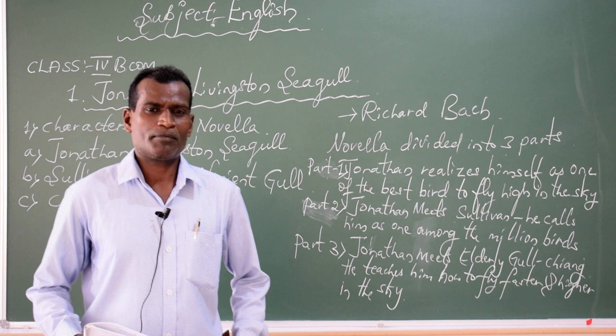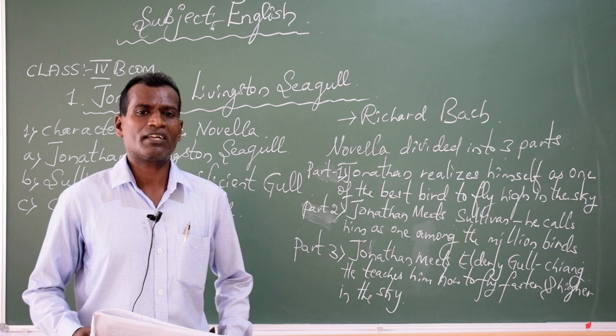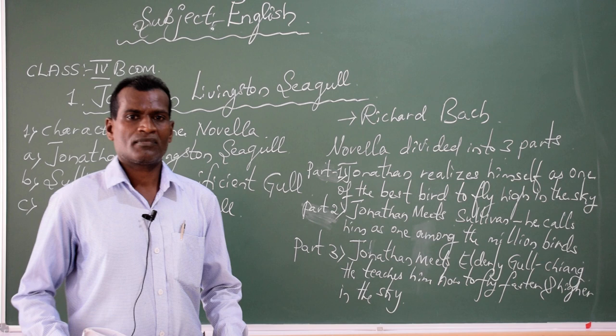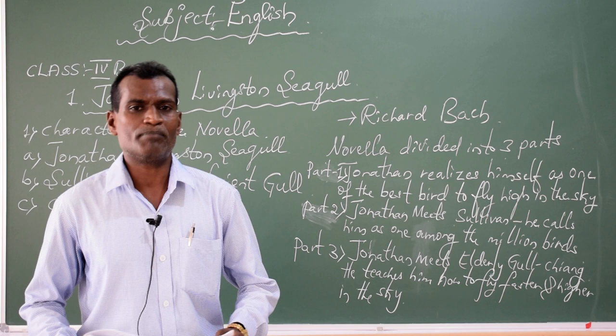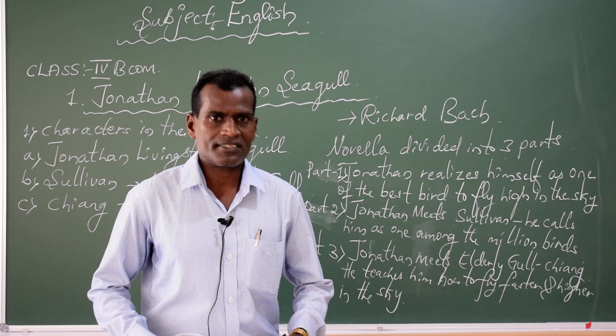Today, I would like to talk about the first chapter in English for BCom students — that is the chapter Jonathan Livingstone Seagull. It is one of the novellas prescribed by Bangalore University for BCom students. This novella is written by Richard Bach. He was one of the poets, a dramatist as well as a novelist, and basically he was a pilot.